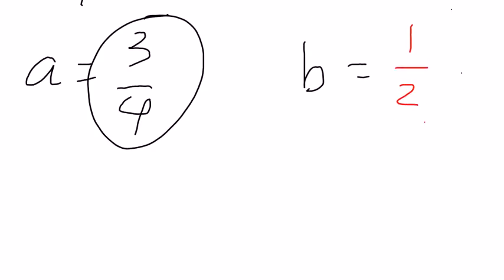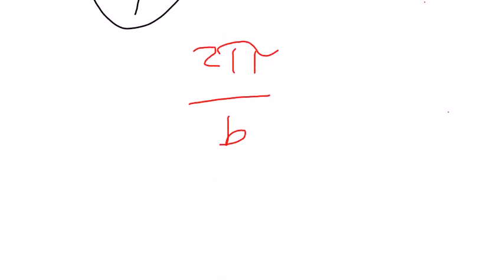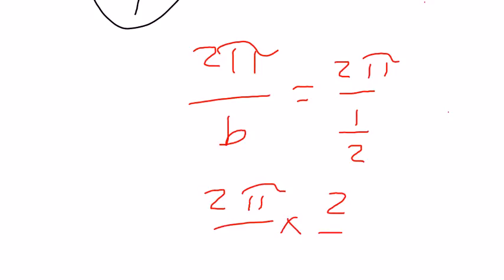So then our formula for B, for the period, is 2 pi over B. So this would equal 2 pi over 1 half, which would be the same as 2 pi times 2 over 1. So our period then would be 4 pi.